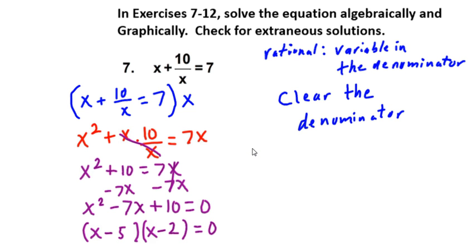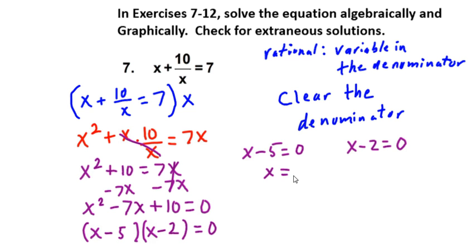Using the zero-factor property, we set x minus 5 equal to 0 and x minus 2 equals 0. Solving for x, we have x equals 5 and x equals 2. So we have solved algebraically. It says also graphically, so let's go graphically to the calculator.